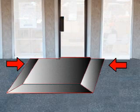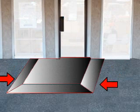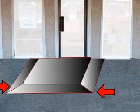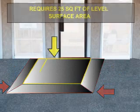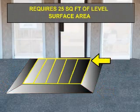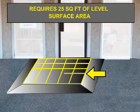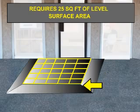There are four ways to quickly identify if a door landing is up to code. One: the landing must have a level surface area. A typical landing, as seen here, requires 25 square feet of level and maneuverable surface area.